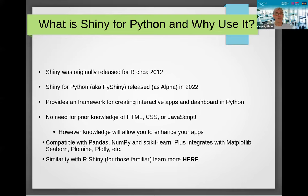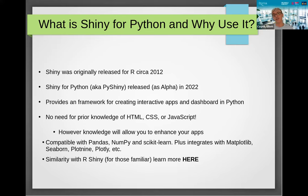Shiny for R was originally released in November 2012, making it about 11 years old, whereas Shiny for Python was only released last year and was initially in alpha — so it's still very new. There are lots of similarities and documentation to help people who know R Shiny migrate to PyShiny. The great thing is it gives you a framework to create interactive apps and dashboards with Python code, and there's no need to know HTML, CSS, or JavaScript. However, if you do know them, that's great because it will allow you to enhance your app even further.